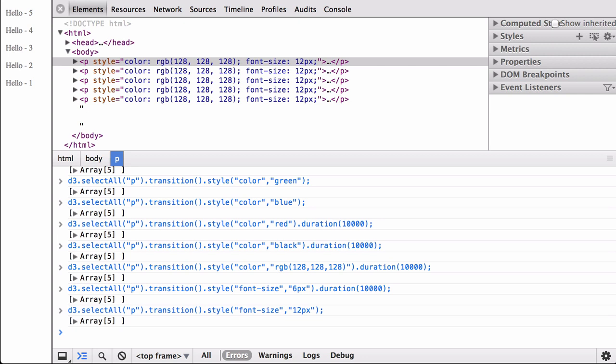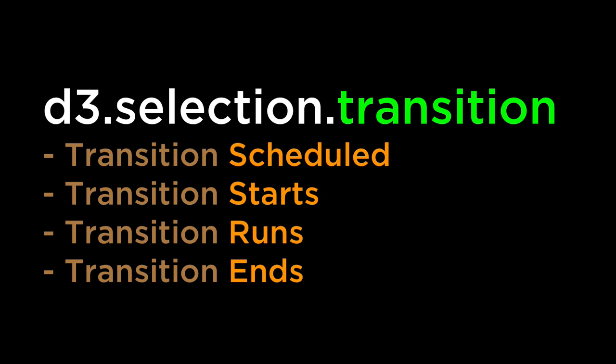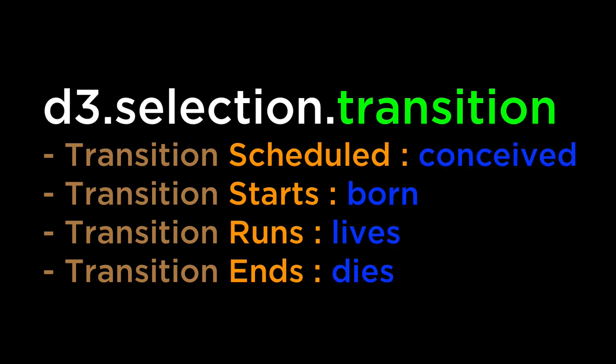Let's bring back the font size without specifying a duration — you saw a flash of numbers as the interpolation happened quickly. Now that we have a better understanding of how a D3 transition is an animation of interpolatable values between keyframes, let's look at the different stages of transitions. The life cycle of a D3 transition is broken down into 4 separate phases. Mike Bostock shares a useful mnemonic: transitions are Conceived, are Born, Live, and then Die.